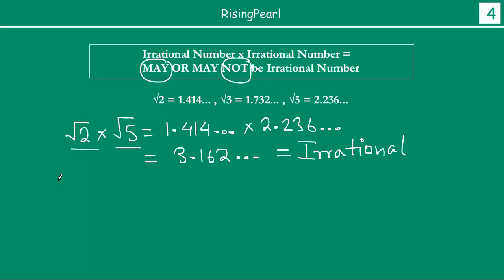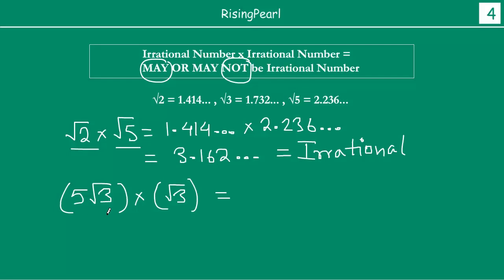Now let's take another example. Let's take 5√3 and multiply it by another irrational number. We have discussed in detail in webisode 9 that if you have a rational number and an irrational number, and you add, subtract, multiply, or divide them, the result is always an irrational number.